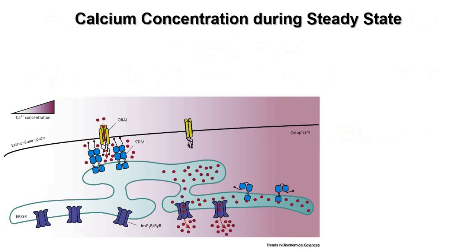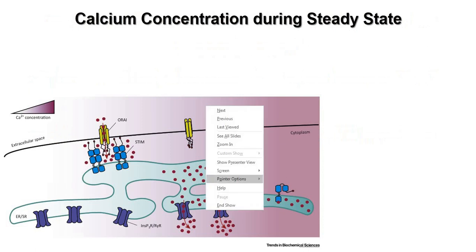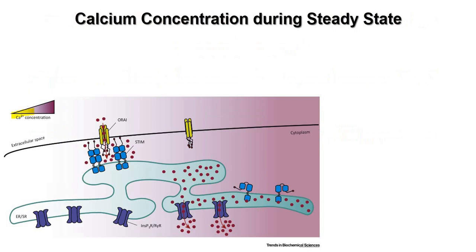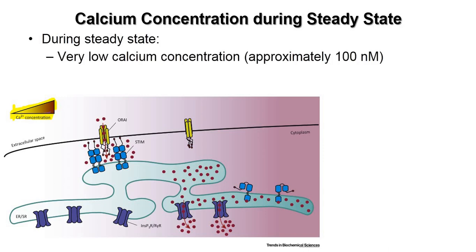First, we will talk about calcium concentration during steady state. At steady state, the concentration of calcium in the cytosol is very minimal — it only increases when activated. The biochemical reason why calcium is so low in the cytoplasm and locked in the endoplasmic reticulum is that during steady state, calcium concentration is as low as 100 nanomolar.